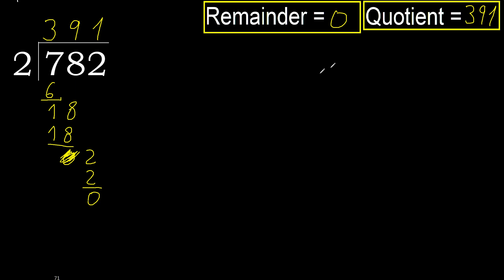Okay. Therefore 782 divided by 2 is 391.